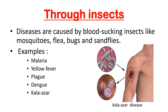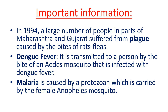Diseases through insects are caused by blood-sucking insects like mosquitoes, fleas, bugs, and sand flies. Some examples of these diseases are malaria, yellow fever, dengue, and kala azar. This image shows the disease kala azar.